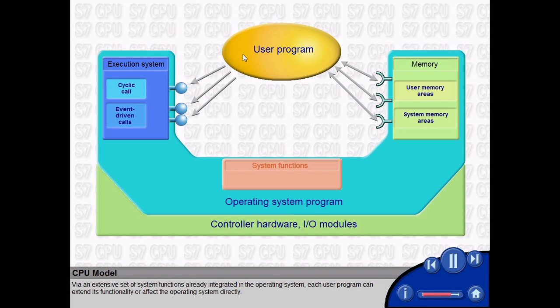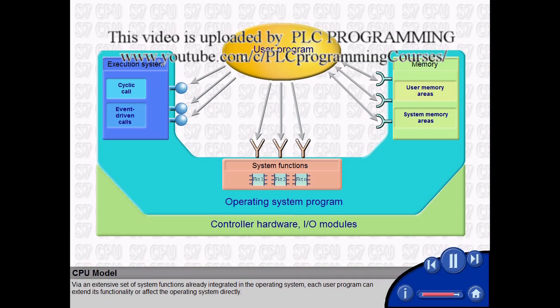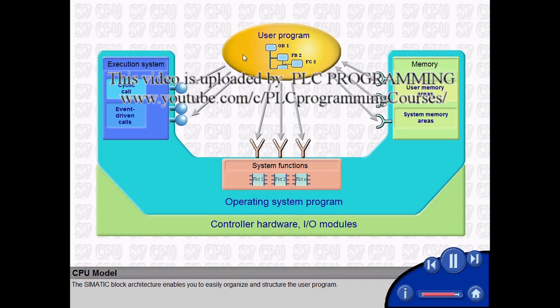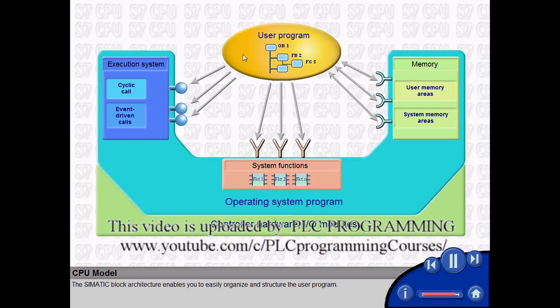Via an extensive set of system functions already integrated in the operating system, each user program can extend its functionality or affect the operating system directly. The SIMATIC block architecture enables you to easily organize and structure the user program.